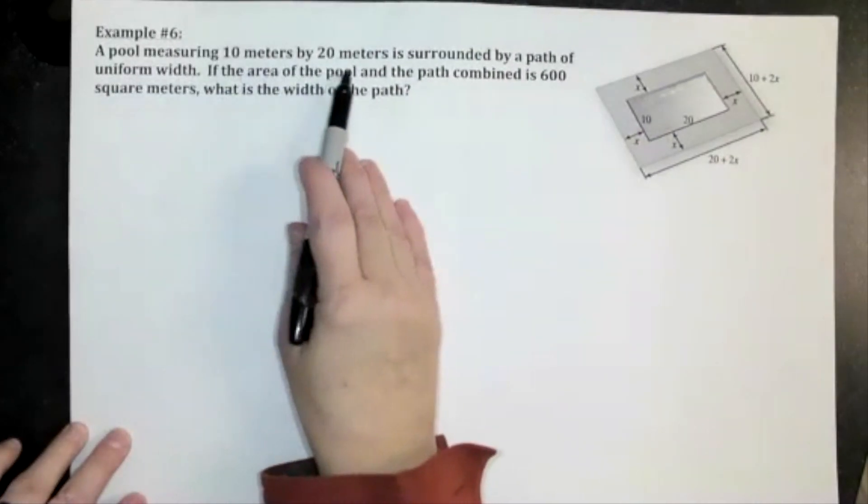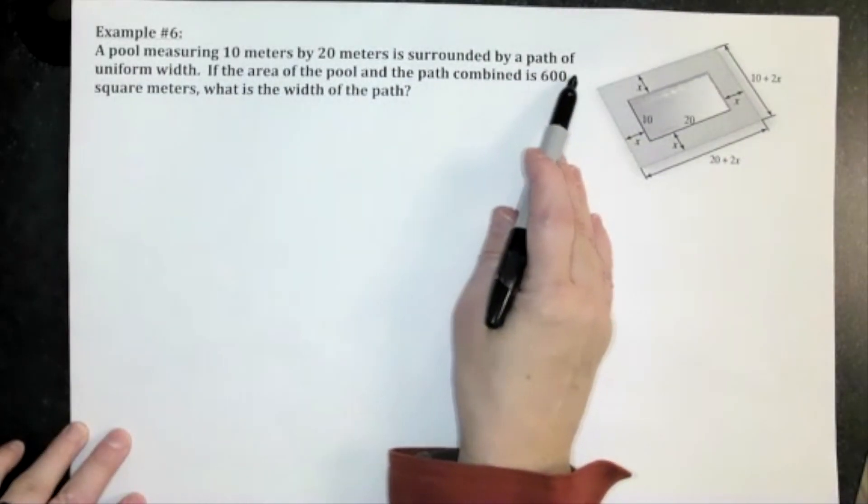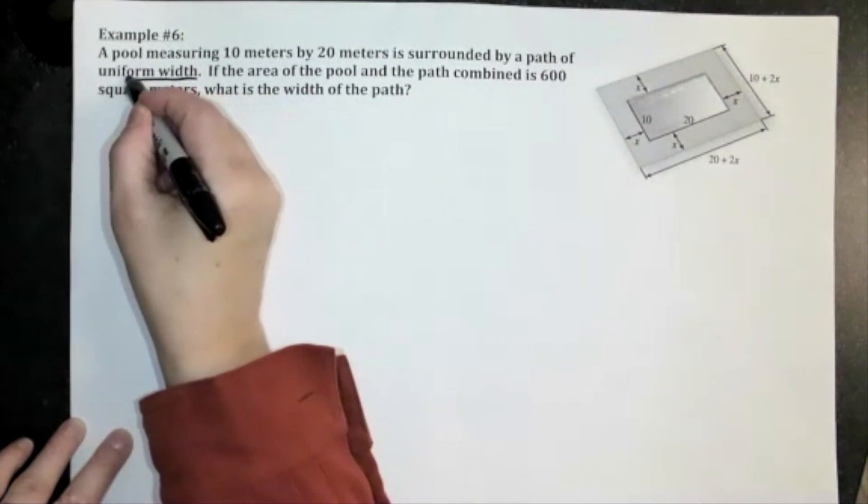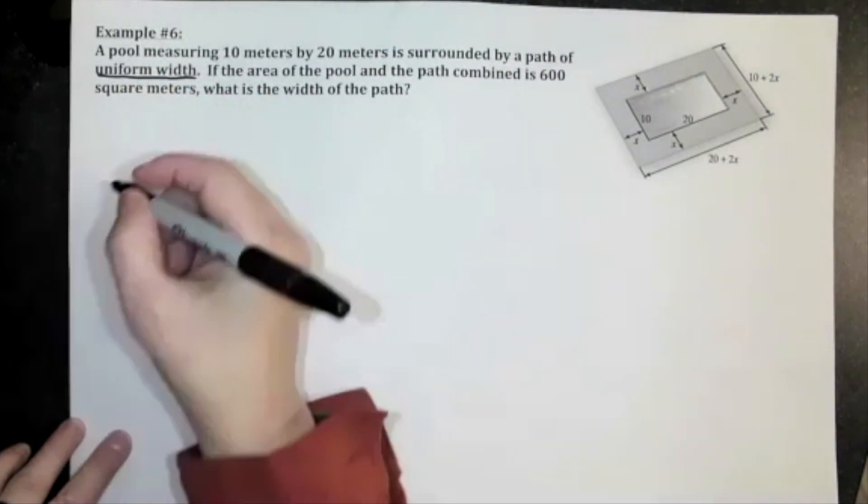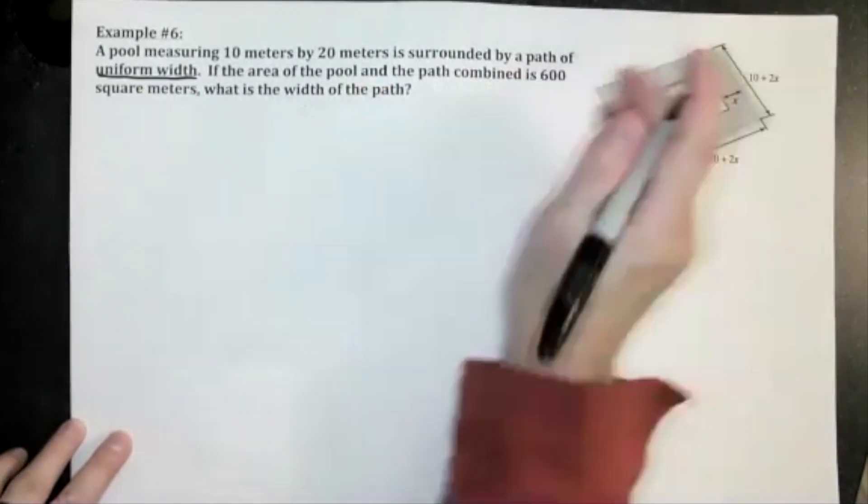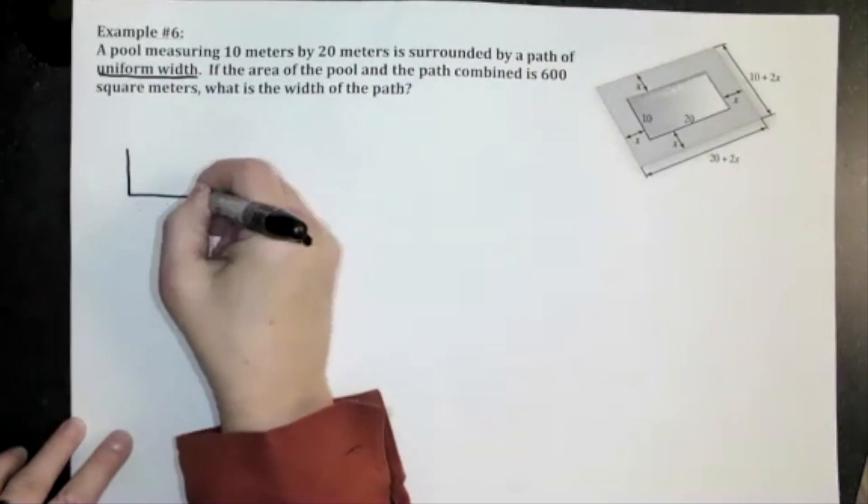If it says a pool measuring 10 by 20 is surrounded by a path of uniform width, we like the uniform width. So if you were not given the picture I would start by drawing.